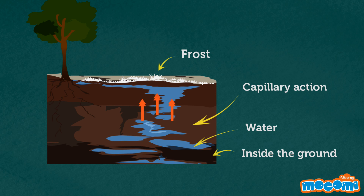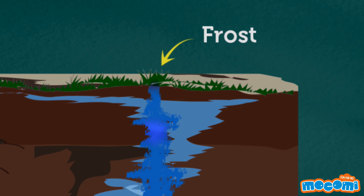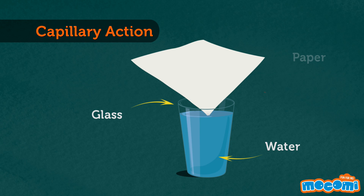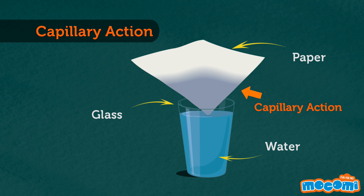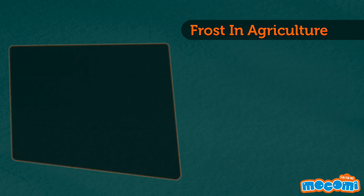The reason that water from inside the ground gets sucked up to the surface is known as capillary action. This is the ability of liquids to flow in very tiny spaces without the help of, and often in opposition to, gravity. If you put the end of a piece of paper into a glass of water, you will notice that the liquid starts moving up. The paper absorbs the liquid because of capillary action. In this way, water trapped inside the soil moves to the surface to build needle ice.